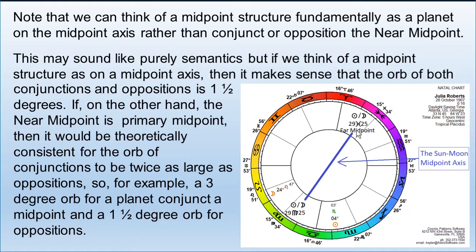The opposition, from our experience, will do the same thing. If the orb is more than a degree and a half, it's weak — it doesn't matter whether there's a conjunction or opposition. We could test this by studying people who have Jupiter conjunct or opposition the Sun-Moon midpoint and see if in both cases it appears weak beyond that degree-and-a-half orb. From personal observation, it seems fairly clear that conjunctions and oppositions have the same orb in midpoint structures.